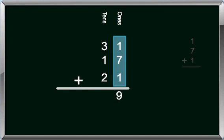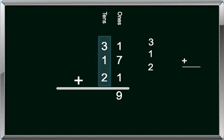Next, we take a look at our tens column. We have a 3, a 1, and a 2. Let's add 3 plus 1 plus 2. And we get 6. So our answer, once we put the 6 at the bottom of the tens column, is 69.